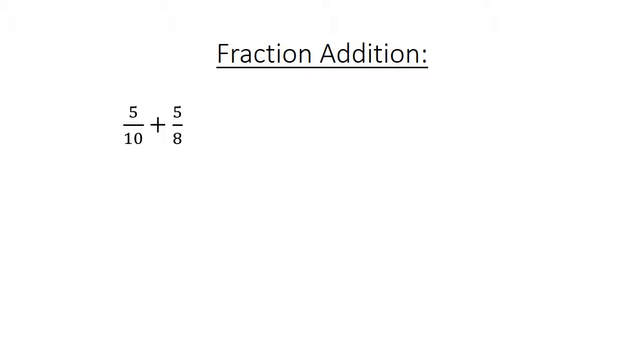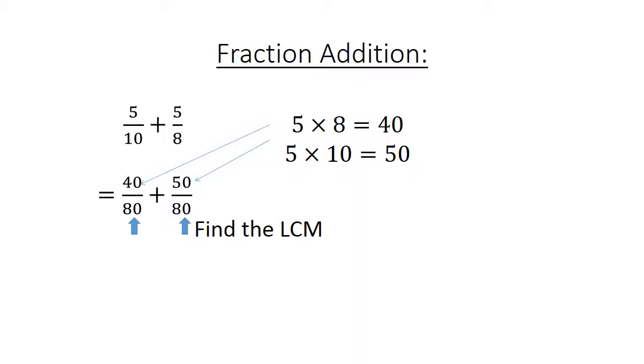Fraction addition: 5 over 10 plus 5 over 8. Find the lowest common multiple: 40 over 80 plus 50 over 80 equals 90 over 80, which equals 1 and 1 over 8.